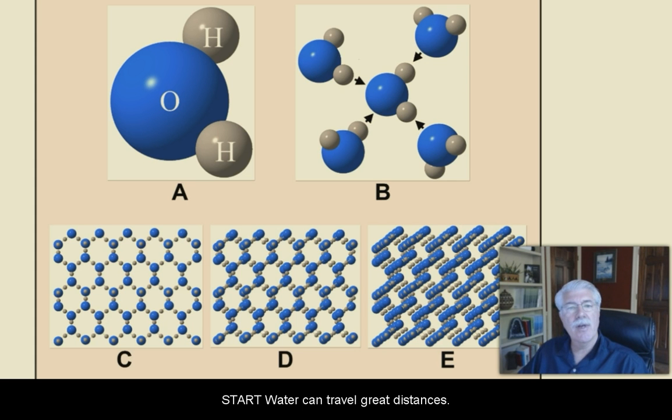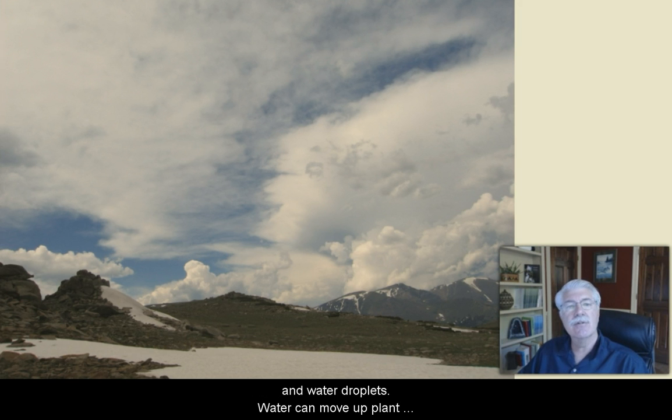Water can travel great distances. For example, clouds are made up of tiny ice crystals and water droplets. Water can move up plant stems, keep animals and plants alive, break rocks, and dissolve or erode almost anything. Water's chemical structure gives it these amazing powers. Water molecules attract one another in a way that makes them form drops.